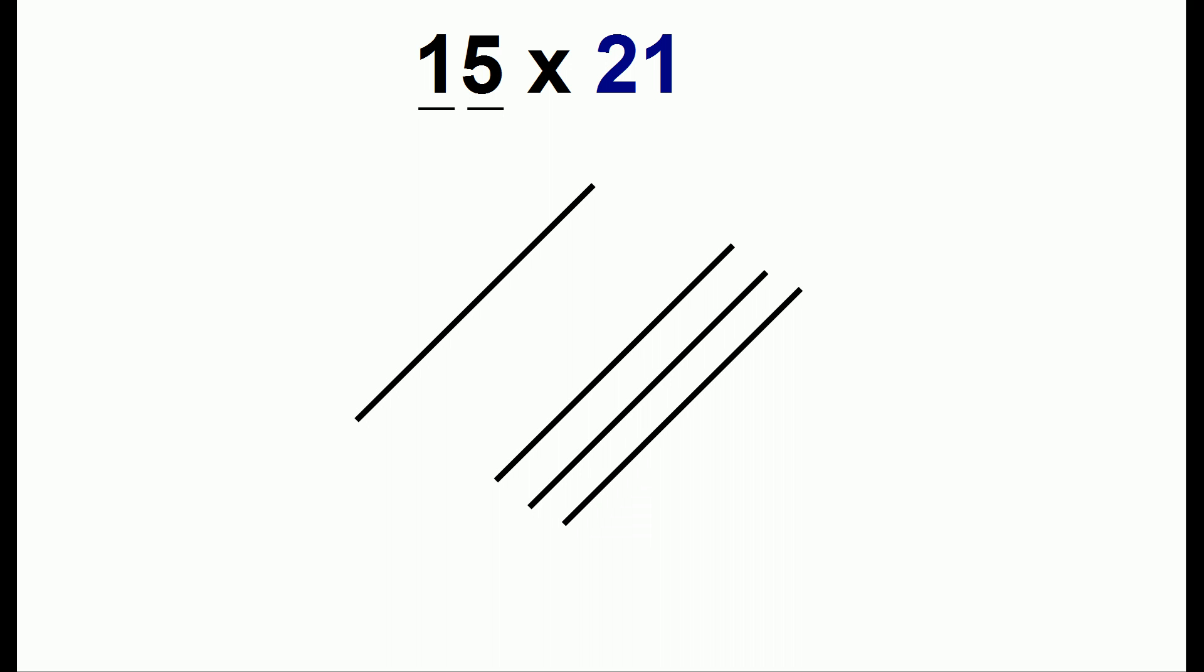We'll do another example. For 15 by 21, we start out by drawing one line. Then we'll leave a little bit of space and draw five lines. And the other number, we draw lines in the other direction. So we draw two lines here, and one line here.